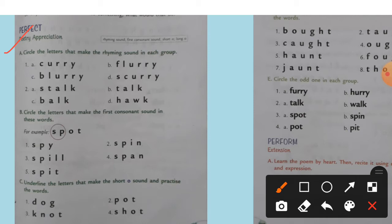So each group, number one. Curry, scurry. Rhyming sound group. Flurry, blurry. Number two. Tuck, stuck. Next. Buck, hawk.